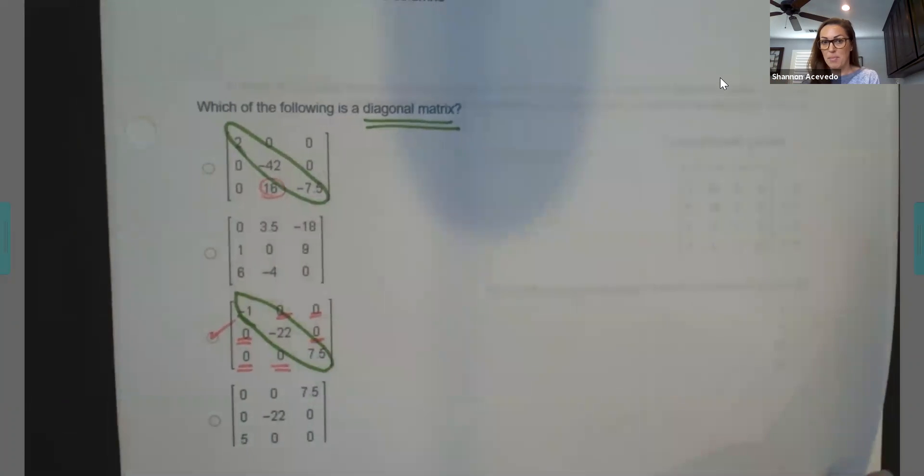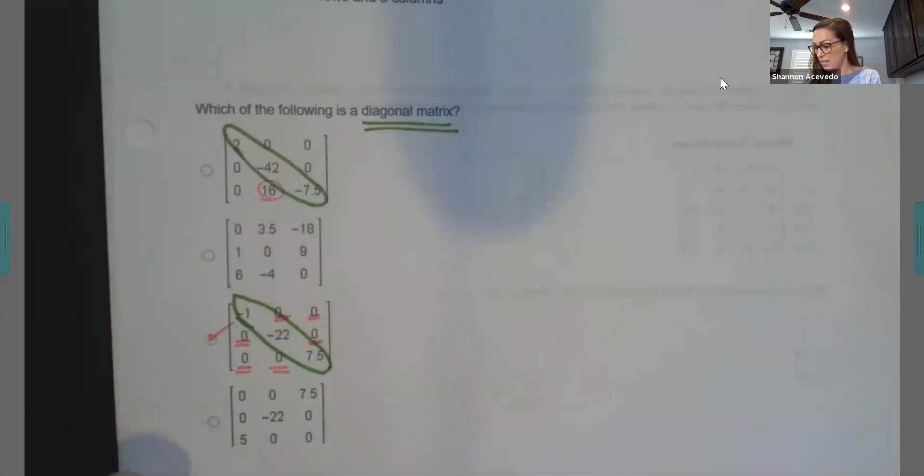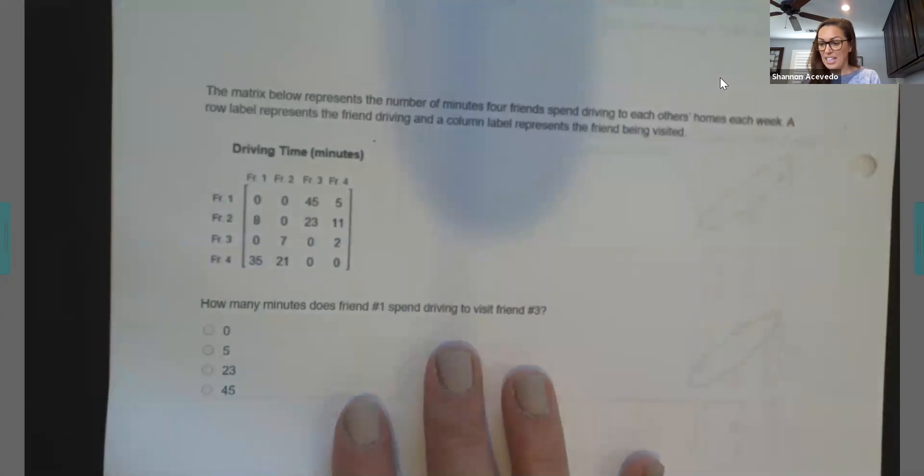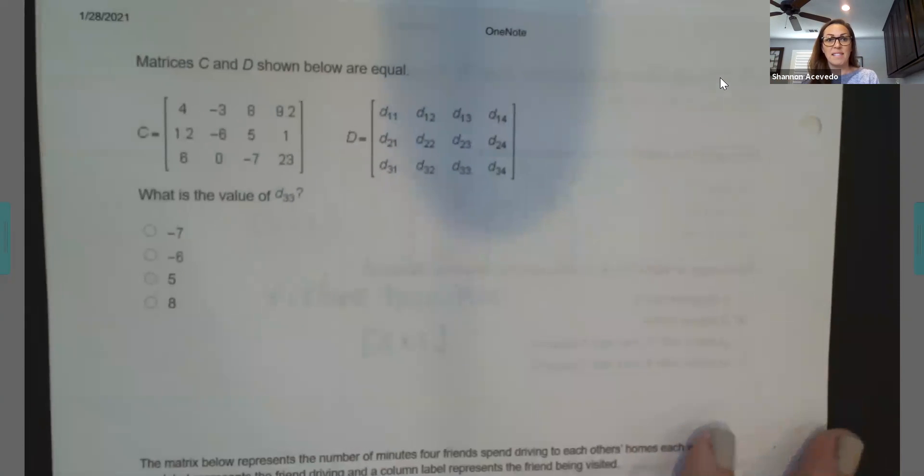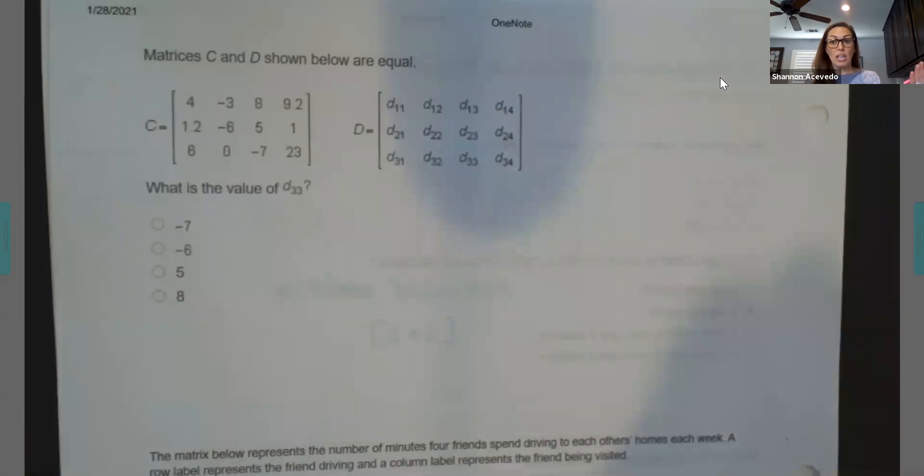All right. My next one. So we're told that they're equal. C and D are equal.